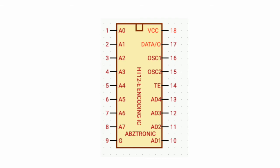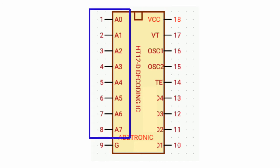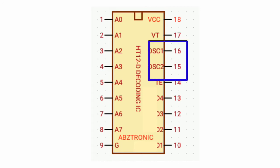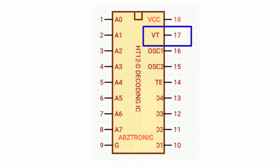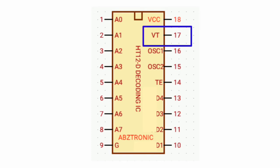Then let's go to the HTTURB-D, which is the decoding IC. The HTTURB-D decoding IC, same as HTTURB-E, has an 8-bit address with 4 data output pins. Pin 9 is the ground and pin 18 is VCC. Oscillator 1 and oscillator 2 are pin 16 and pin 15. Pin 17 is VT or valid transmission, to indicate that the decoding IC is receiving the signal from the encoding IC.